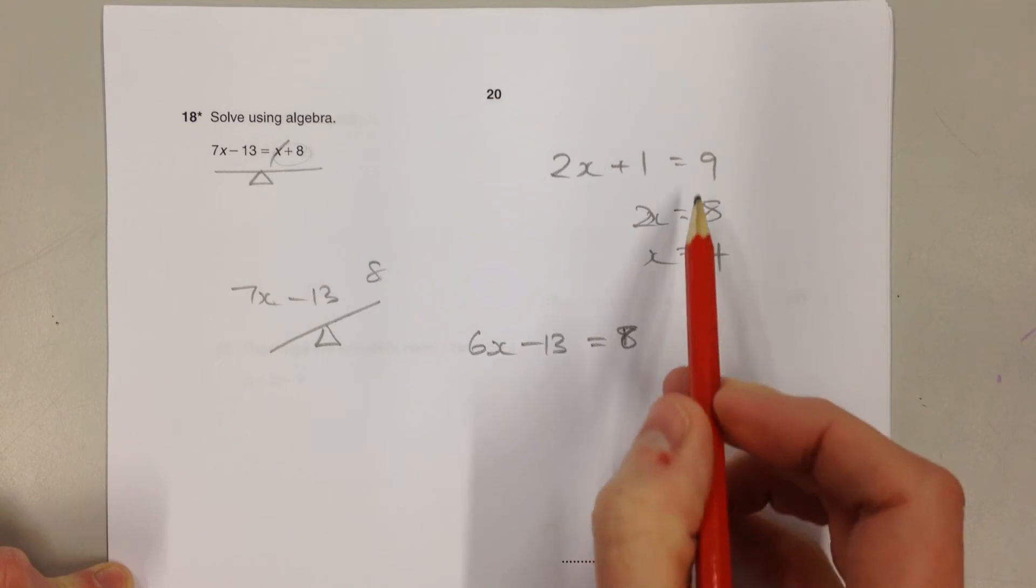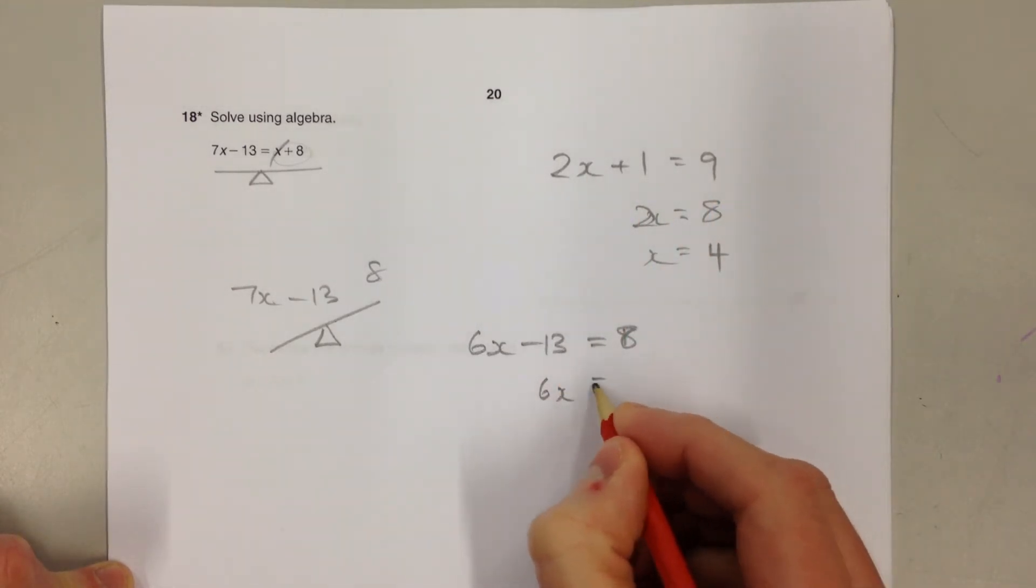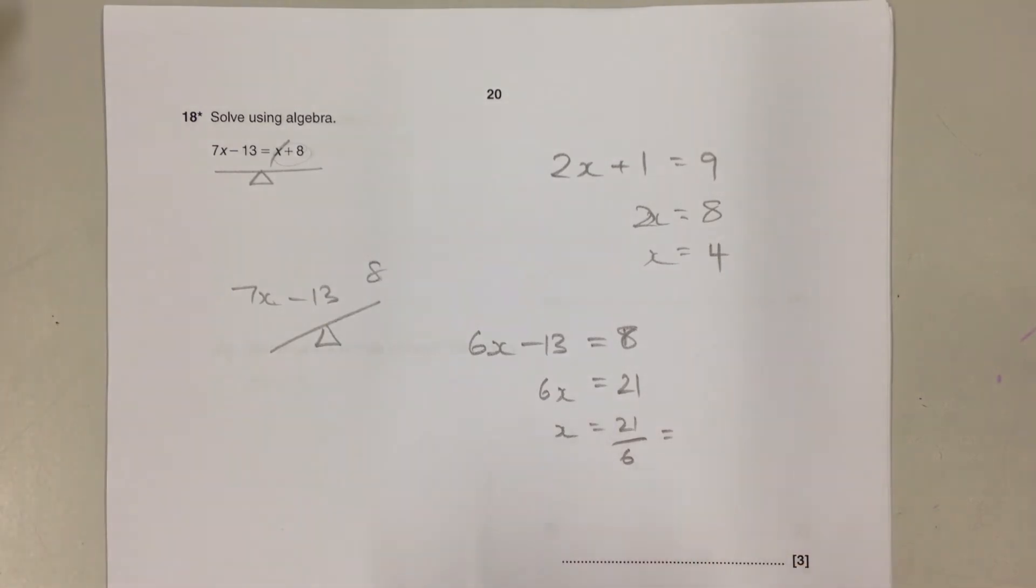Now what we've got is a simple two-step equation which we can solve like this. Begin by adding the 13, so 6x equals 21, and then divide by the 6 to get the answer.